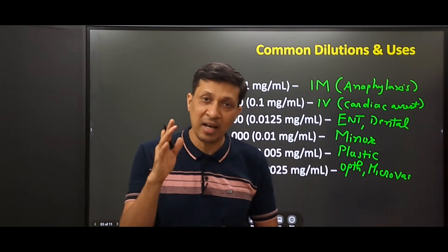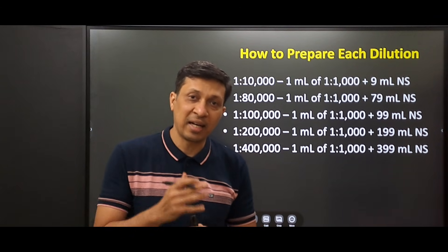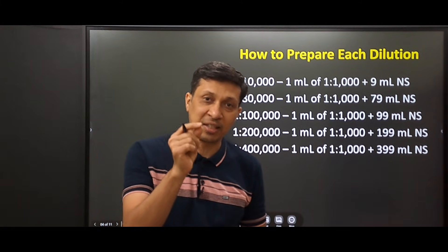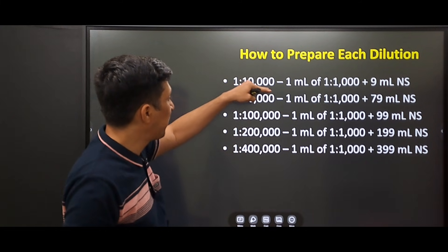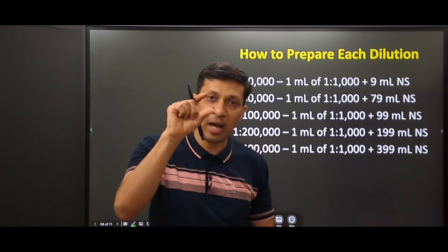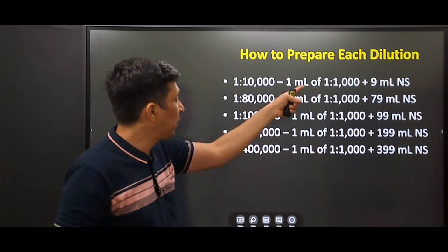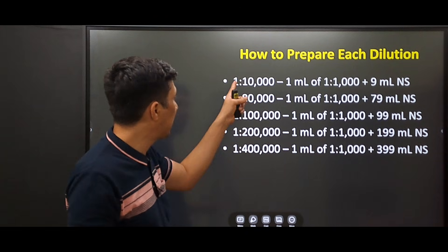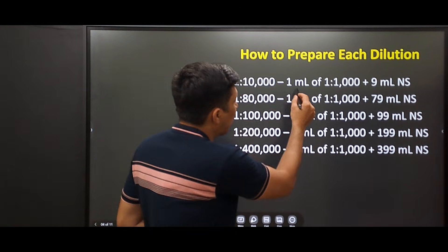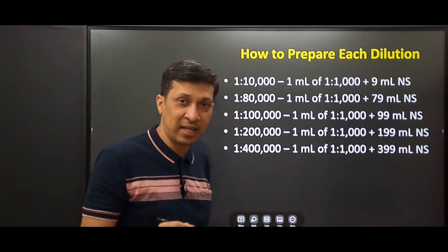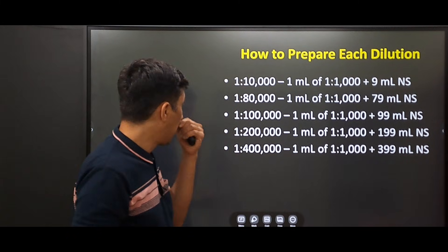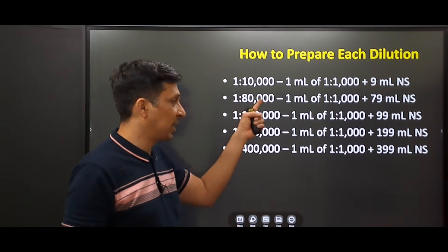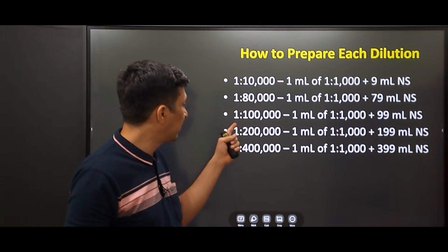Now we will see how different dilutions of adrenaline are prepared. For one in ten thousand: one ml of the adrenaline ampoule — which is one in one thousand — is diluted in nine ml of normal saline. One ml plus nine ml becomes ten ml, so it becomes one in ten thousand. When one ml of one in one thousand is added to 79 ml of normal saline, it becomes one in eighty thousand.